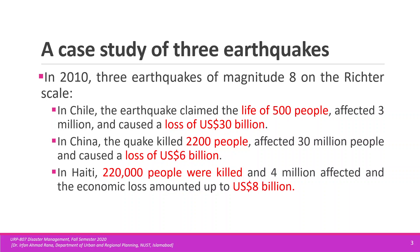You can see that there is a disparity in the effect of similar earthquakes happening in the world. What were the different characteristics or the current situation of the urban areas where each earthquake happened? What were the characteristics of the buildings, the socio-economic conditions of people? Why was there such a huge gap in death toll across these three different countries?